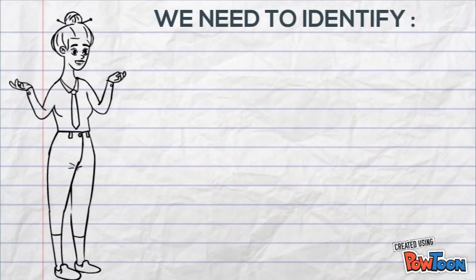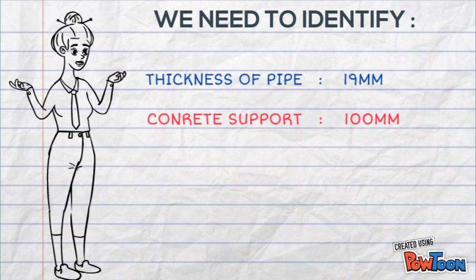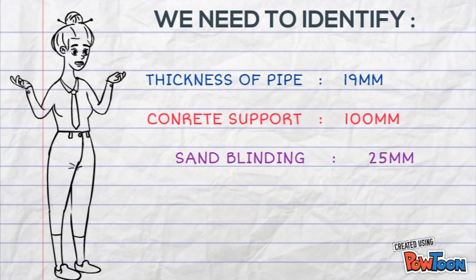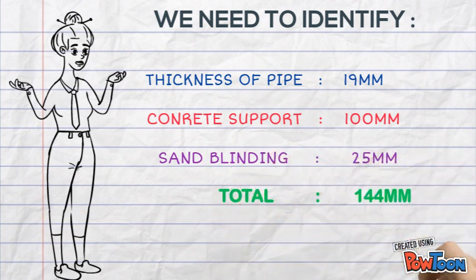Then, you need to identify the thickness of pipe: 19 mm, thickness concrete support: 100 mm, and thickness sand blinding: 25 mm. Total: 144 mm.